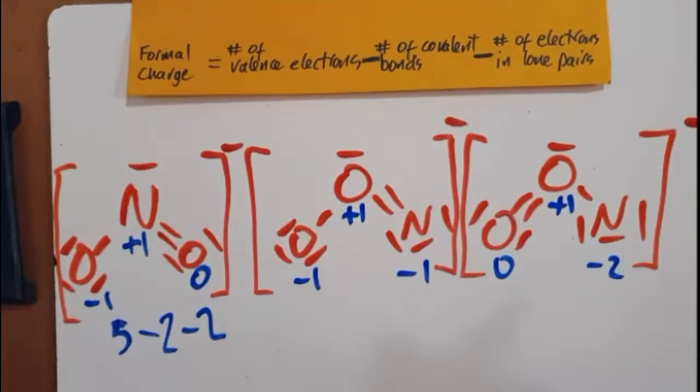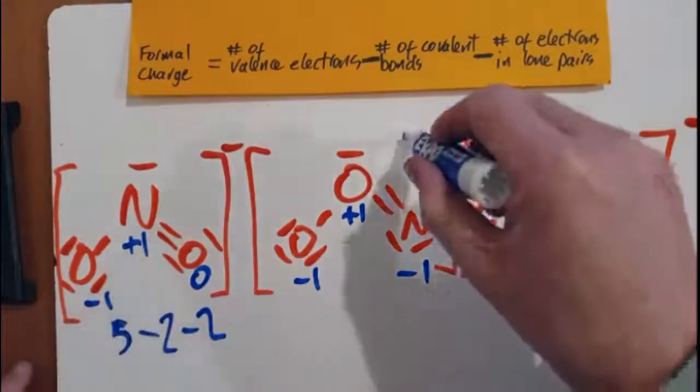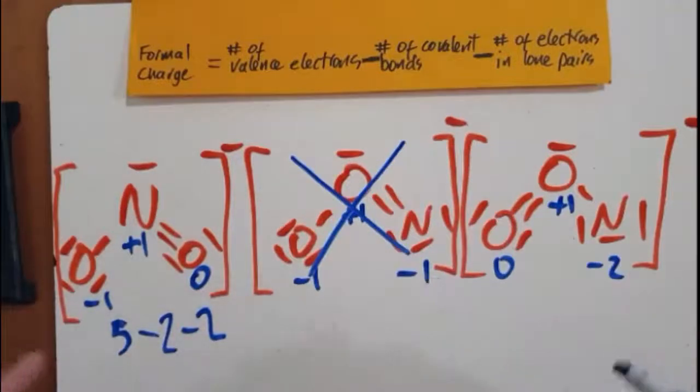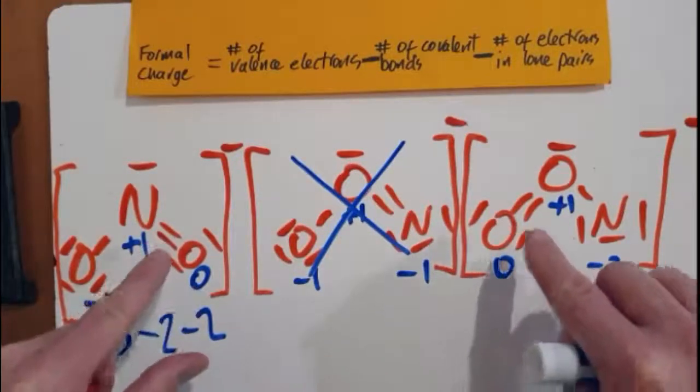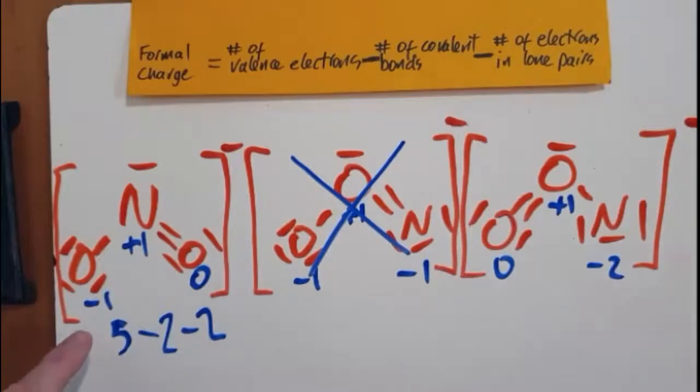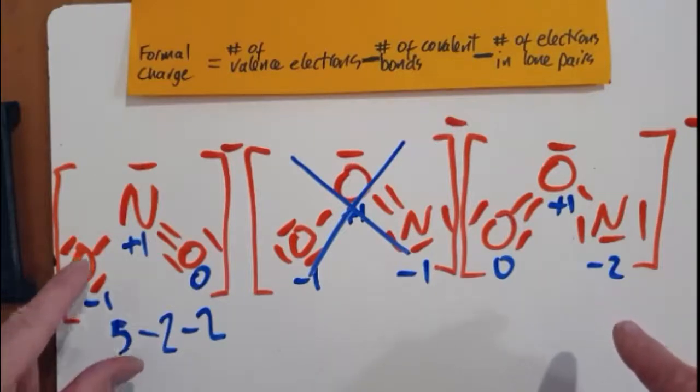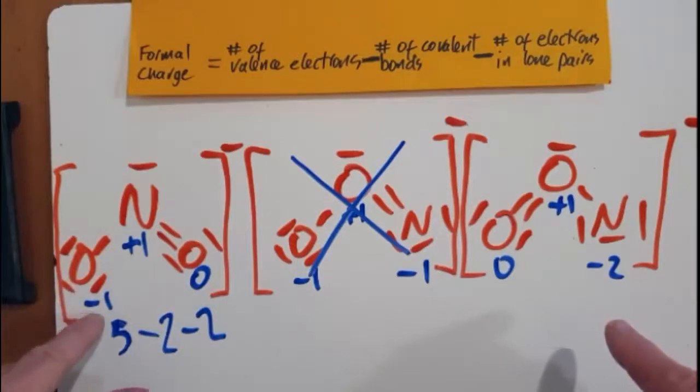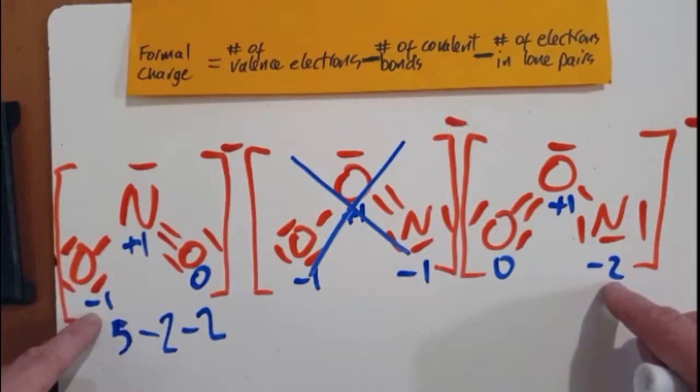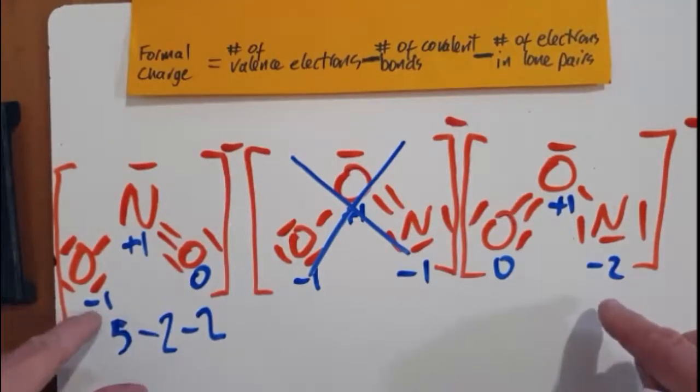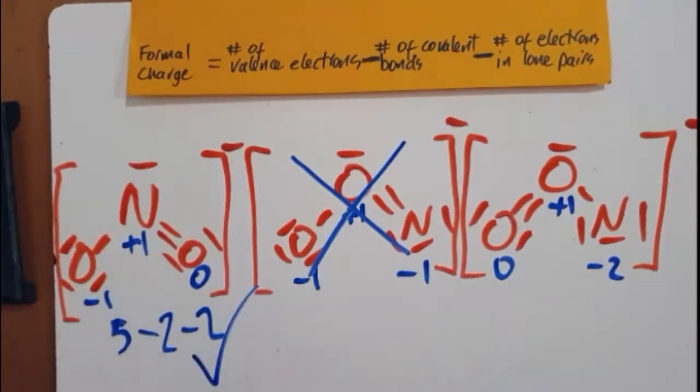All right. So for formal charge, zeros are good. So I see a zero here and a zero there. So that means this structure is excluded. So the first rule is the one with the most zeros wins. The second rule is the most electronegative atom should have the negative charge. So what's more electronegative, oxygen or nitrogen? Well, we saw before it's oxygen. So oxygen must have the negative charge. So it's negative here. But in nitrogen, that's got the negative two charge. So this is the one that wins. Excellent. And we're done.